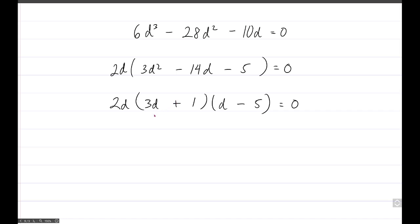So 3d times d is 3d squared. 3d times negative 5, that's a negative 15d. Add that to a positive 1d. So negative 15d plus 1d is a negative 14d. Great. And then a plus 1 times a negative 5 is negative 5.